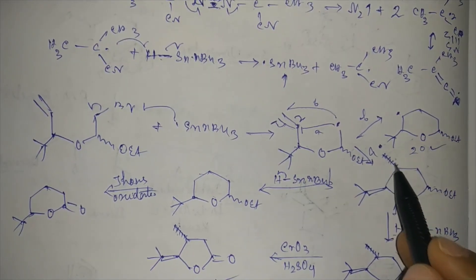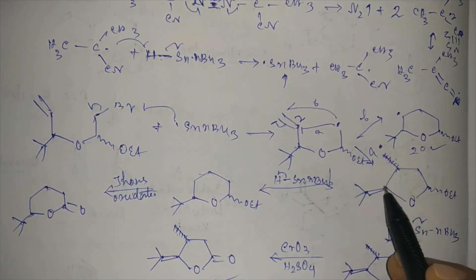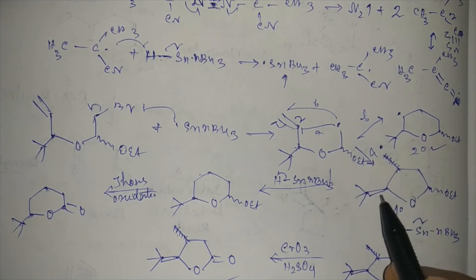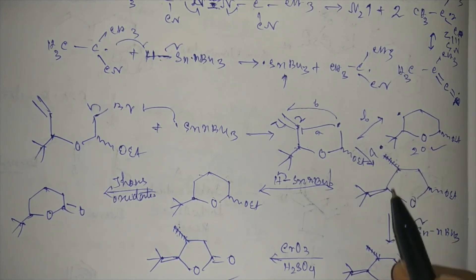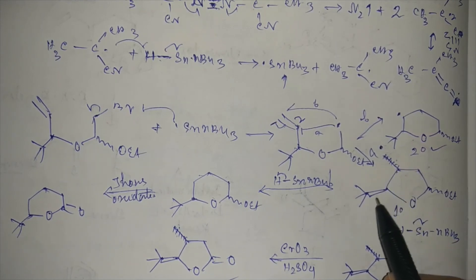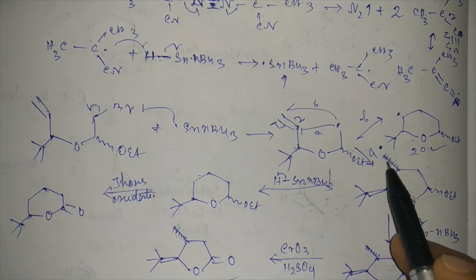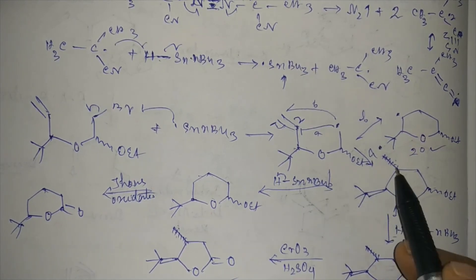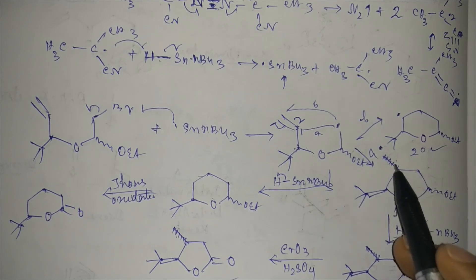If the two groups are on the same side, then the steric crowding will be higher. But if these two groups are in opposite side, then the steric crowding will be less. And that's why, if it is above the plane, then this radical will form from below the plane to reduce the steric crowding between these two groups.